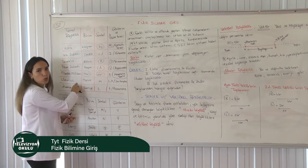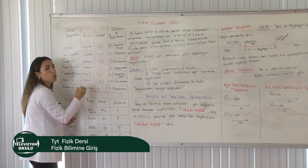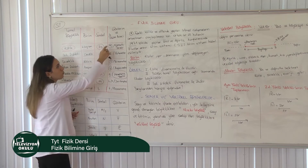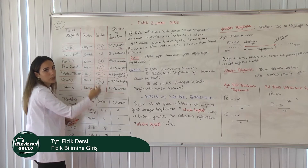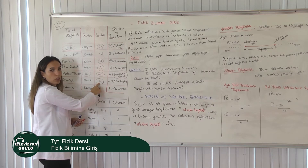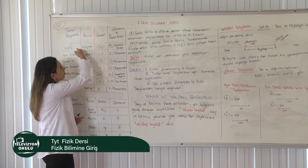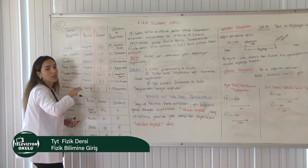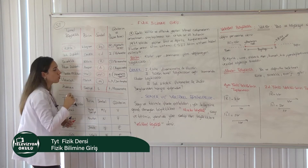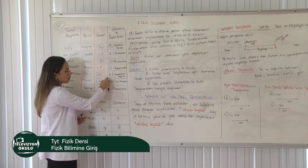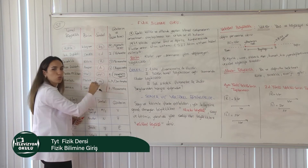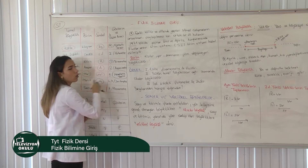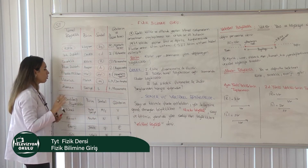Uzunluğun birimi metredir, küçük m harfi ile gösterilir. Dikkat: bu küçük m'yi kütle için kullanılan küçük m ile karıştırmayalım; sorunun gelişine göre ayırt edelim. Uzunluğu gösterim olarak l harfi ya da x harfi ile de gösterebiliriz. Uzunluğu şerit metre ile ölçüyoruz.